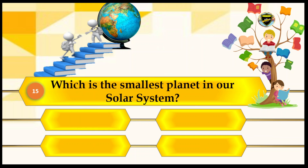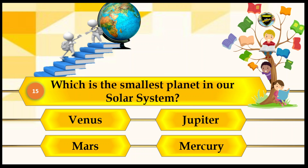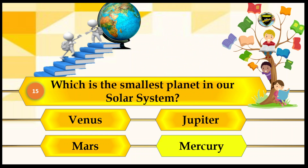Which is the smallest planet in our solar system? Your options are Venus, Jupiter, Mars, and Mercury. Initially Mars is suggested, but after deliberation the answer is confirmed as Mercury. The contestant declines a lifeline and locks Mercury as their final answer. Let's see the next one.